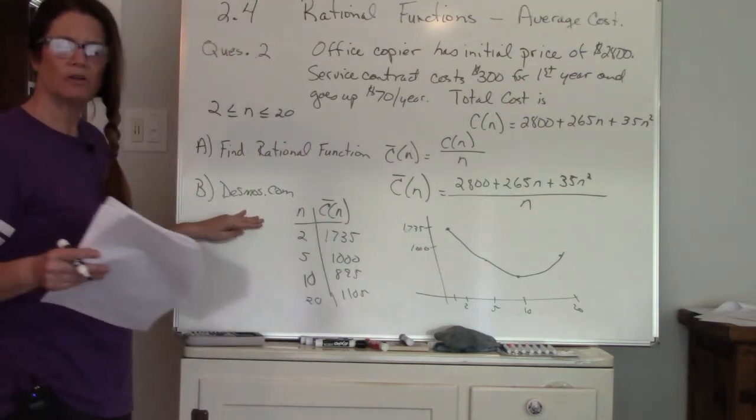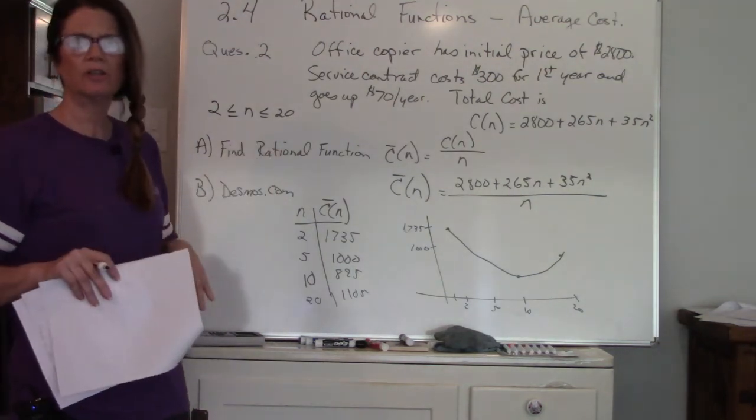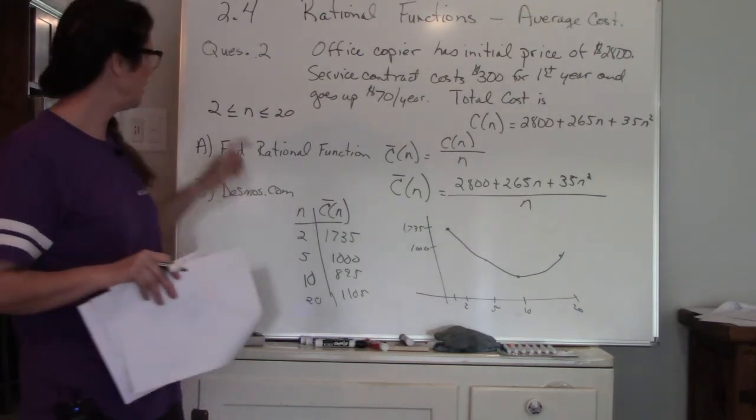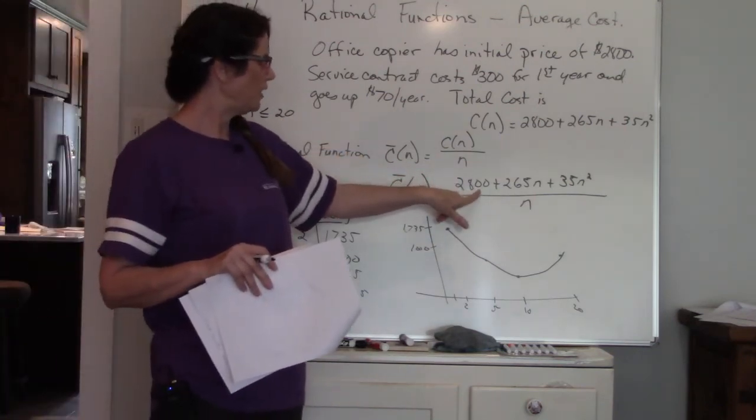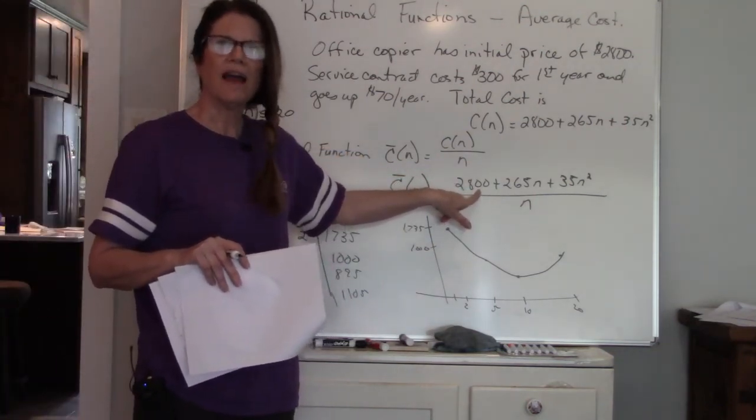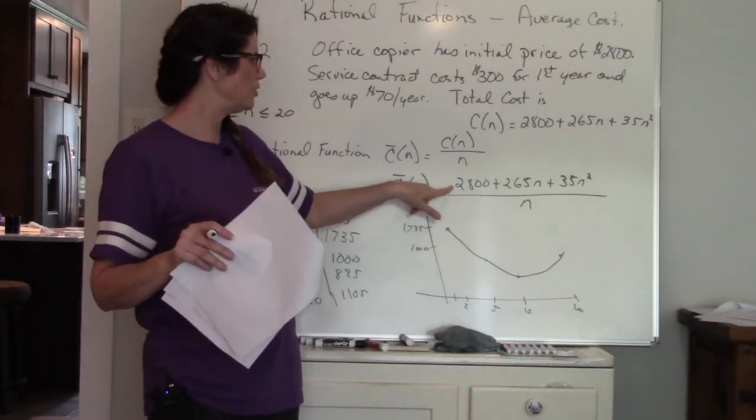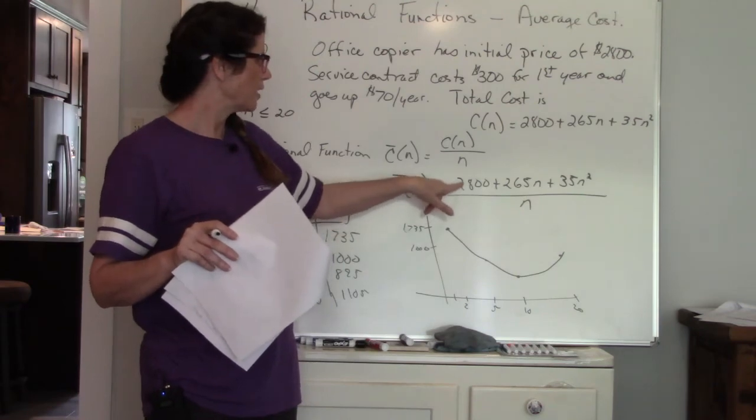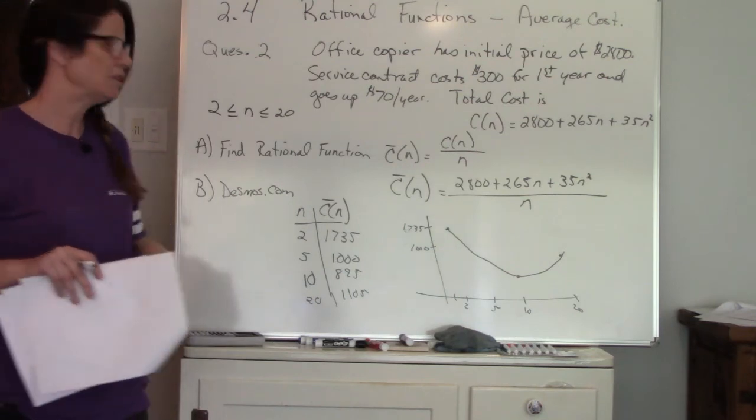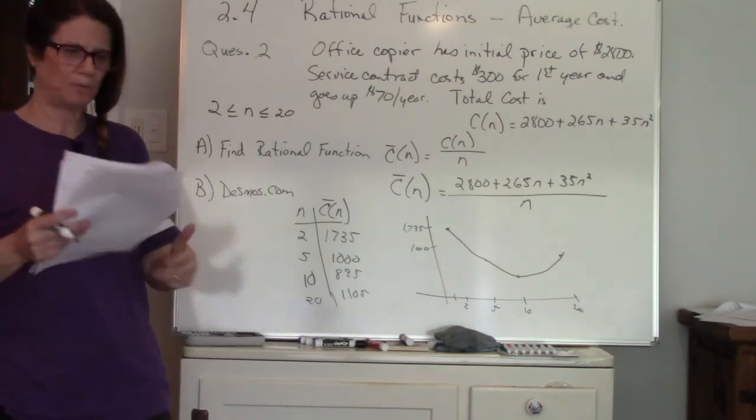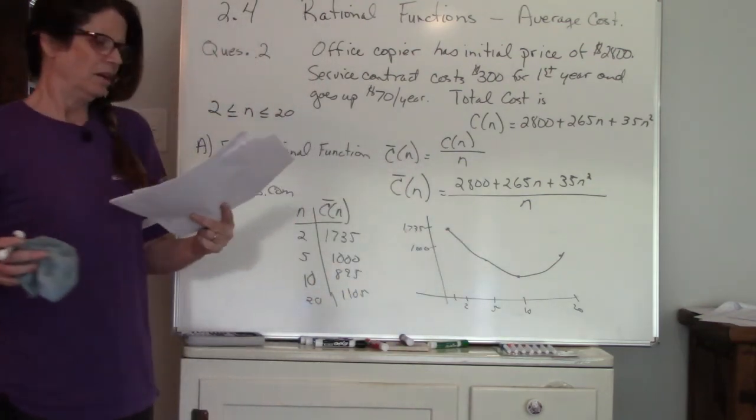If you want go on to Desmos.com and adjust your table values, your x's and your y's to fit. The x's I would put between 2 and 20. Since I have 2800 as my constant that will be at least the value I want to have, so I would probably do between 2800 up to 4000 and then you can see the graph.